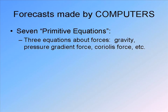These primitive equations describe how the physics of the atmosphere work. You apply them to each of those grid points to find out what the future holds. Three of the seven equations are about forces — how forces like gravity, pressure gradient force, Coriolis force, and centrifugal force are contributing to the winds at each point. We learned about that in words and by drawing vectors in this class, but we could have done it using equations.